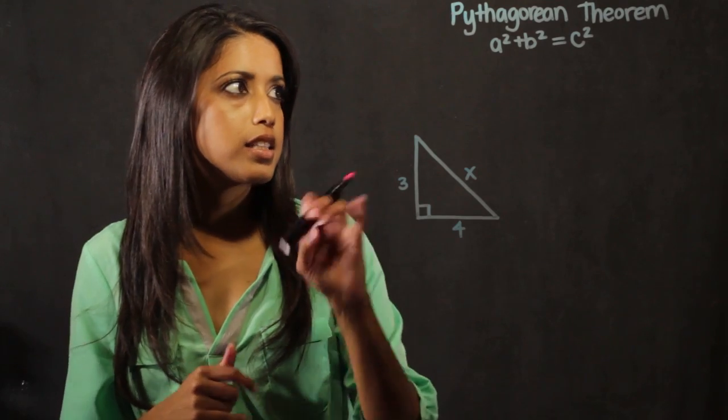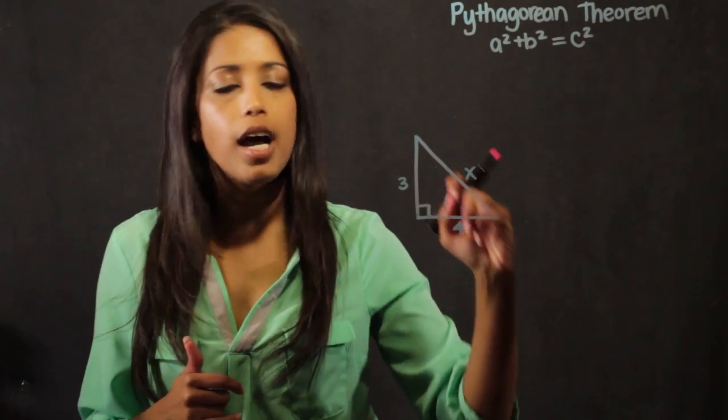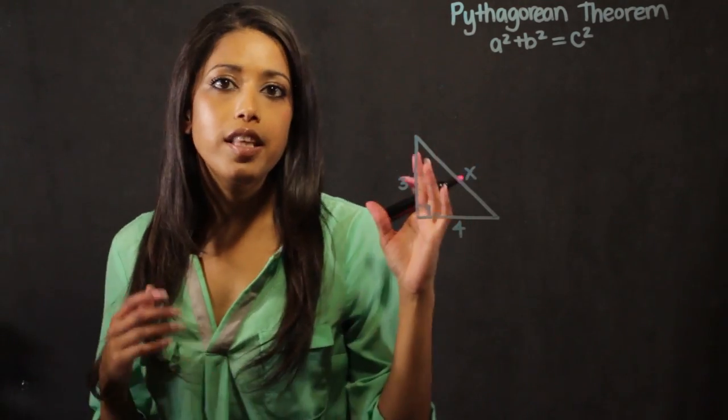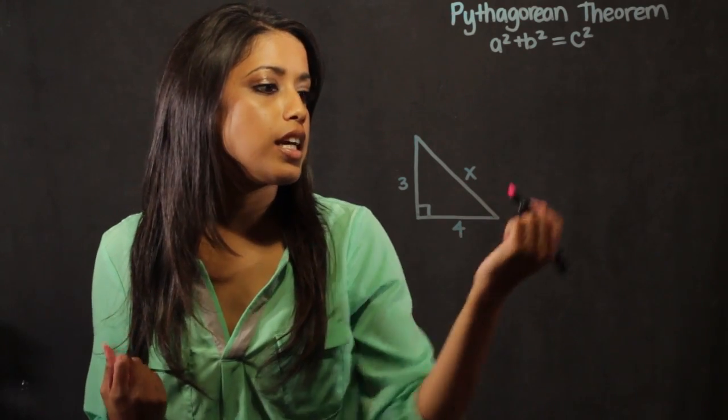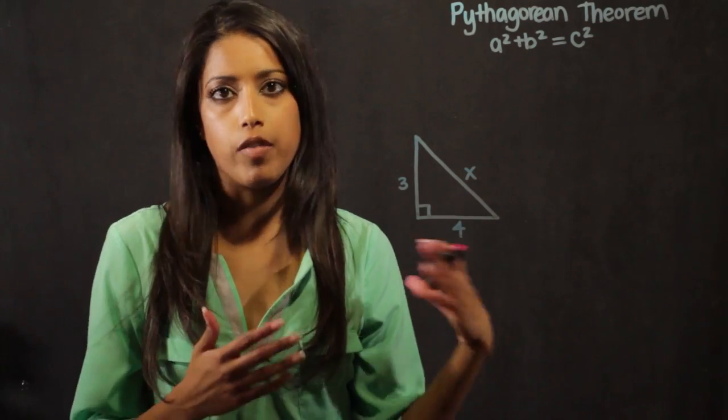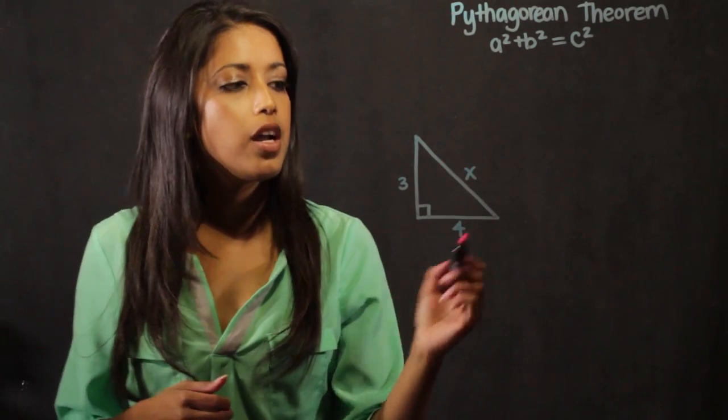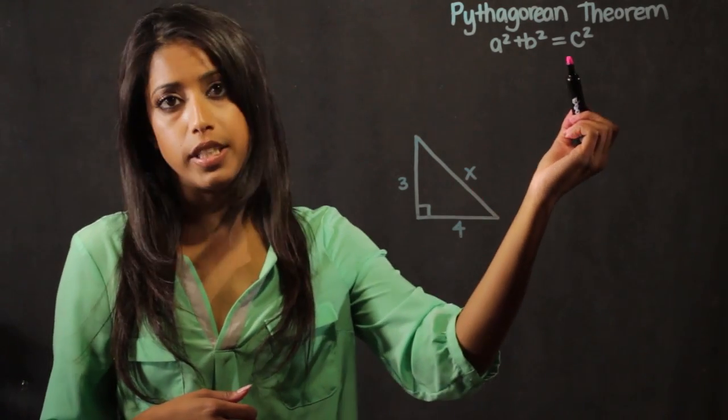So it would be this side and this side and c squared is going to be the hypotenuse of the triangle. When I want to find the distance, I basically figure out which one am I solving for. In my problem here, I'm solving for the hypotenuse which is going to be c.